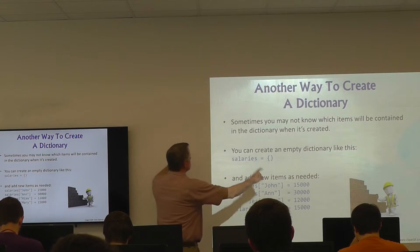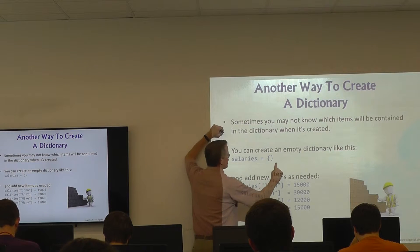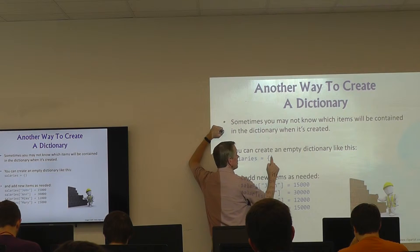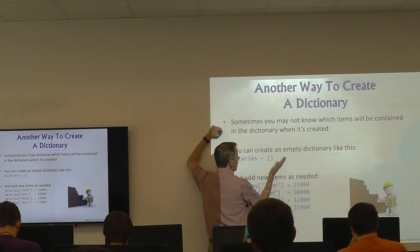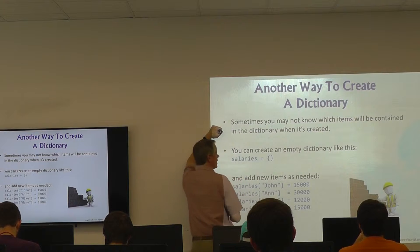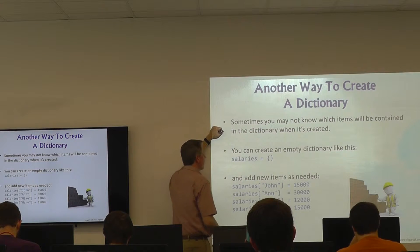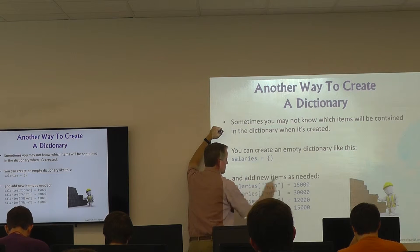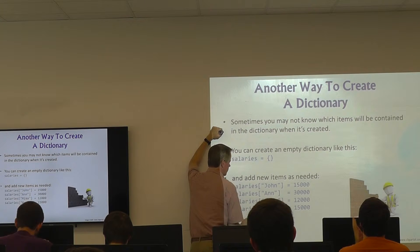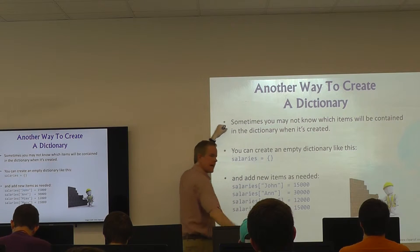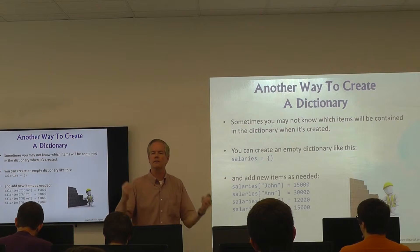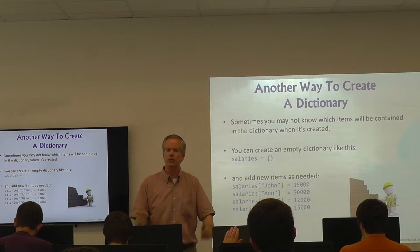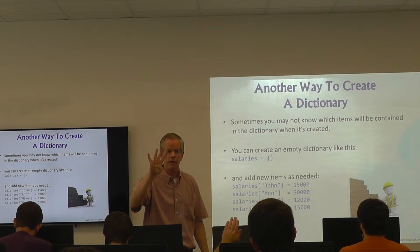Another way to create a dictionary is to start with an empty one using empty squiggly brackets — almost like creating a blank list — and then add everything you want. For example: `salaries['John'] = 15000`, `salaries['Ann'] = 30000`, `salaries['Mike'] = 12000`, `salaries['Mary'] = 15000`. Run through those four commands and you've got a dictionary with four entries.